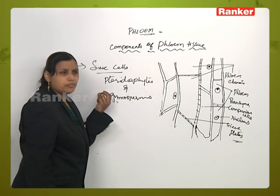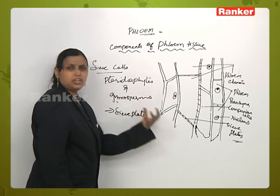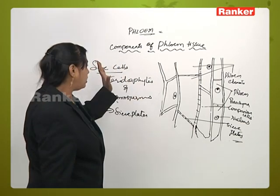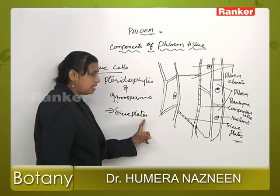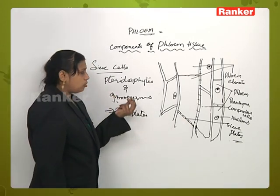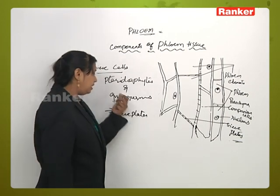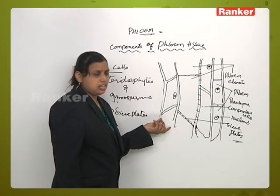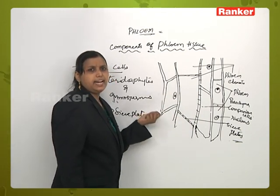To summarize sieve cells: they are long, narrow cells with pointed ends; their end walls are oblique; they originate from the same mother cell; one cell is connected to the other through the protoplast. They have small sieve plate-like structures that help connect one sieve cell to the other. In pteridophytes and gymnosperms, these sieve cells occur at the end walls of the lateral cells — not at the beginning or in the center.